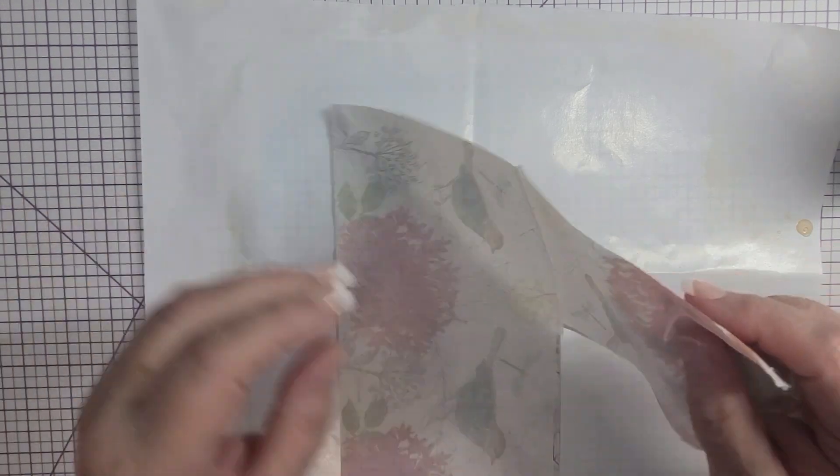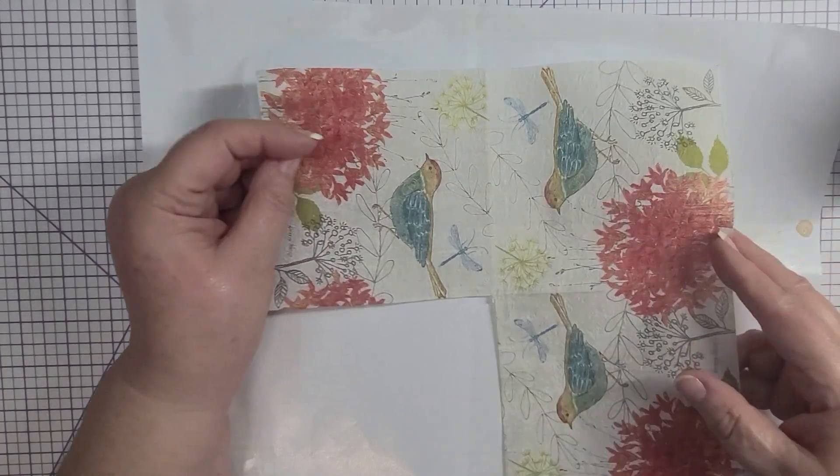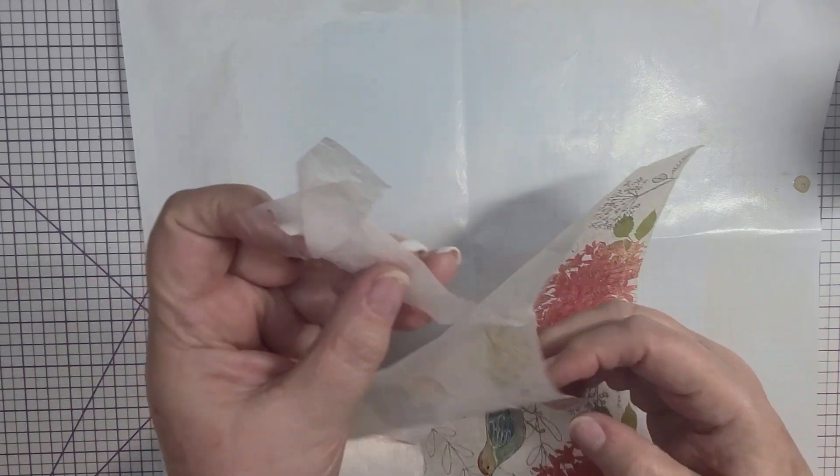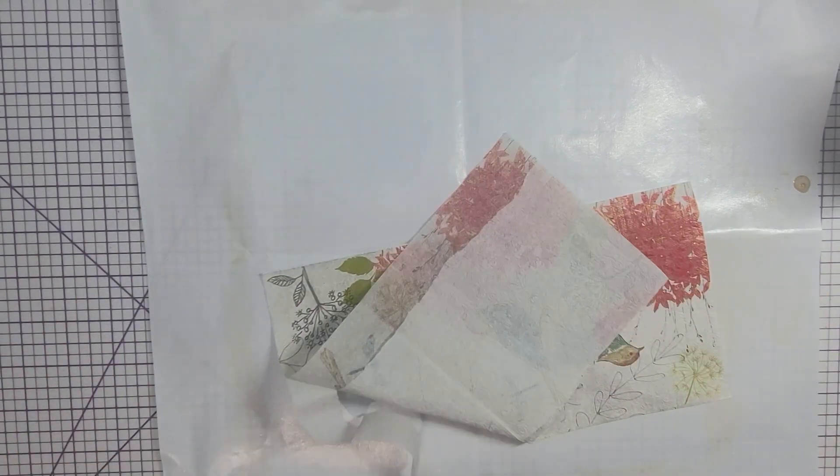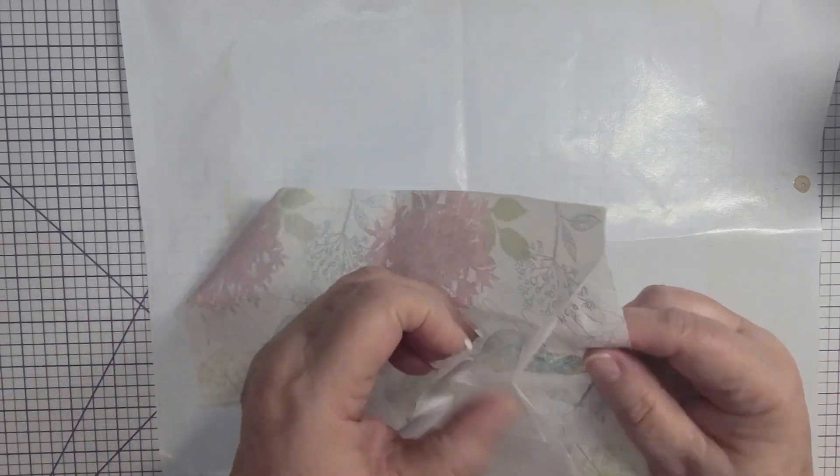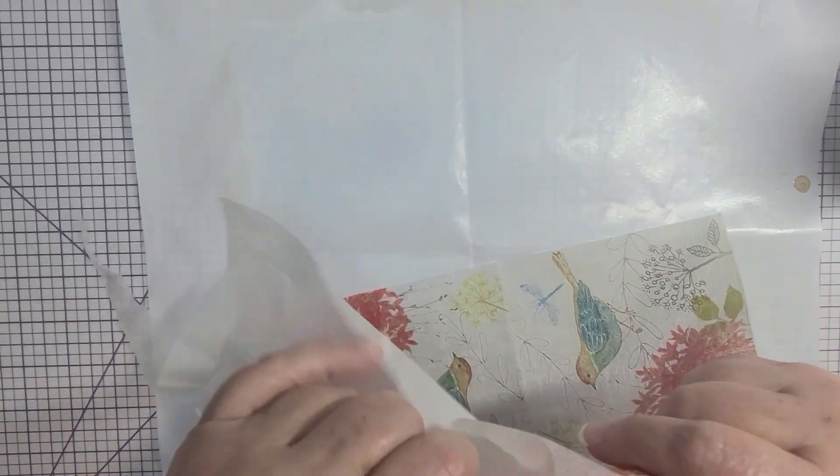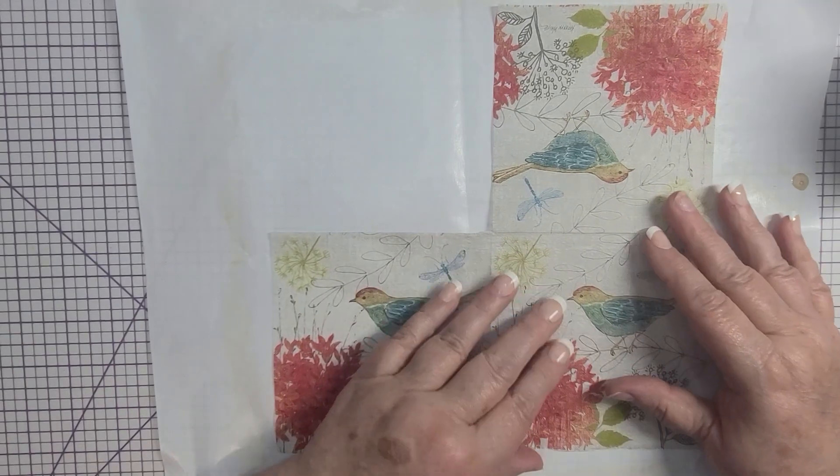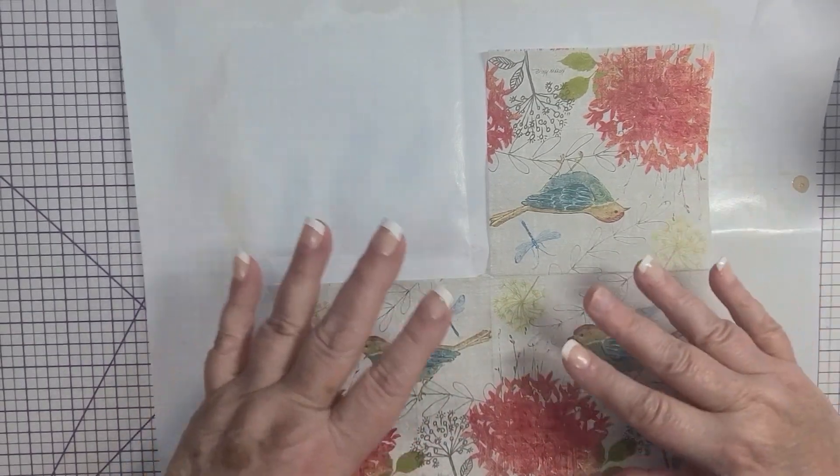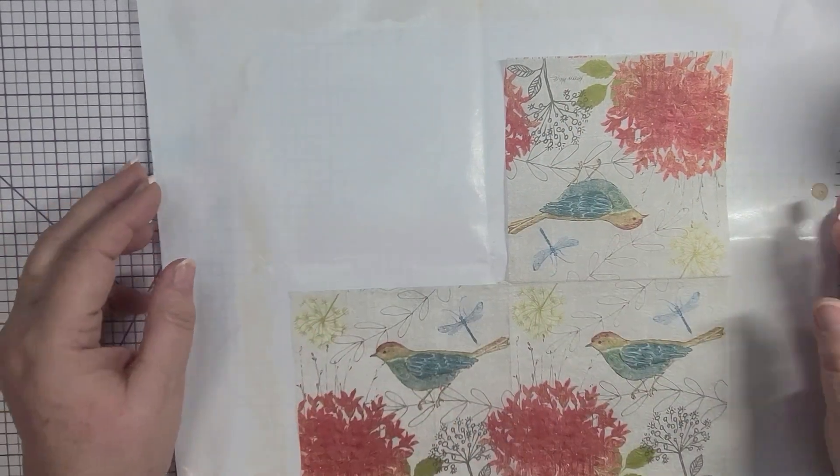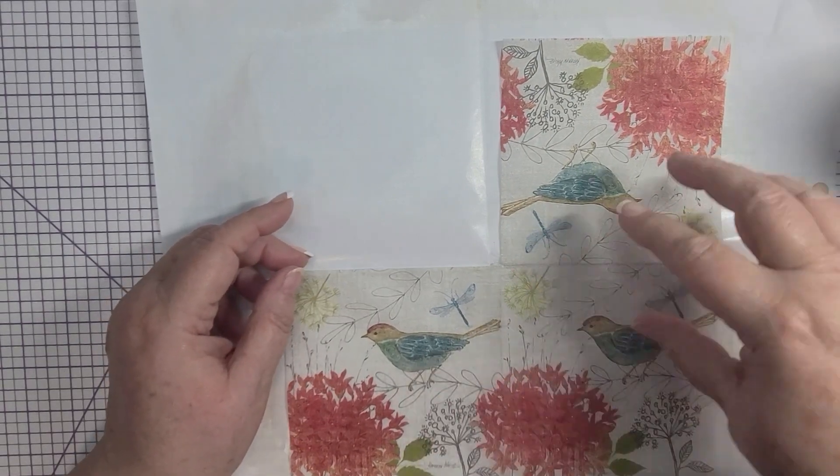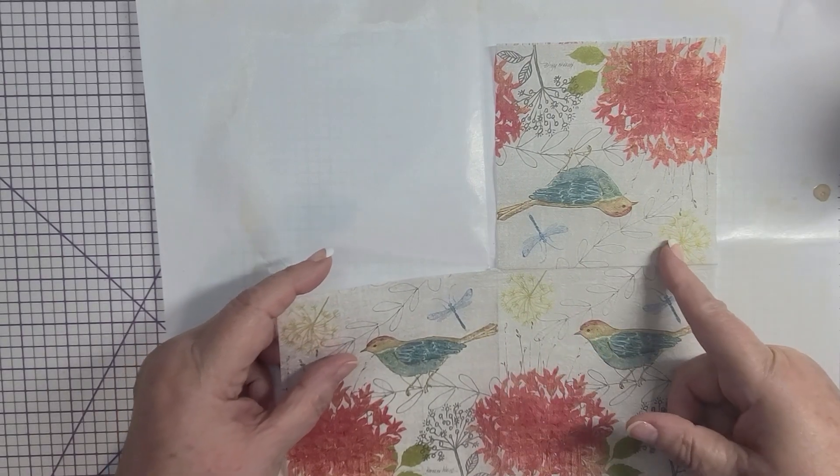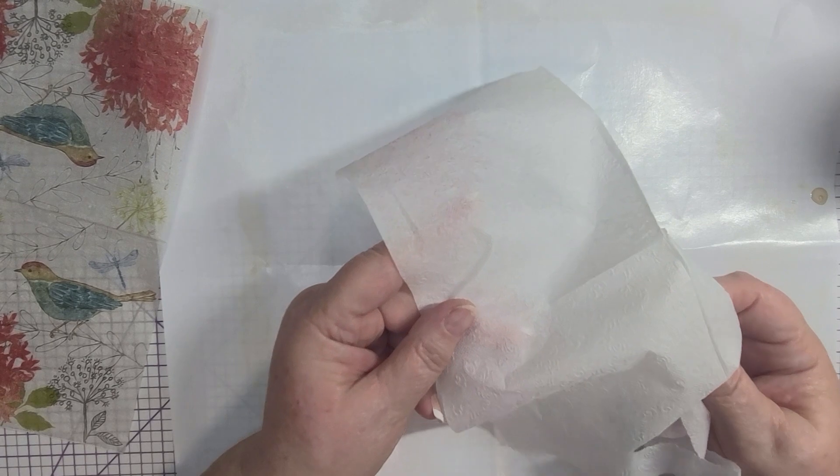Now what we want is a napkin. And this one happens to be just a part of one that I had, but you want to remove the white backing. There's one layer or two layers of white backing. Just make sure that that all gets removed. Okay. So now you just have your napkin. A full size napkin that has an all over design is going to be a lot more useful than something like this that has four quadrants and a repeat pattern is not going to be as useful.